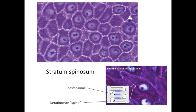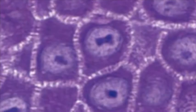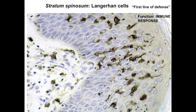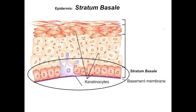The main function of the stratum spinosum is to provide strength and elasticity through all those cell junctions. The cells are named after the apparent spines between them, which are actually anchoring junctions. Besides the keratinocytes, there are also immune cells called Langerhans cells. There are hundreds of these within every square inch of your skin, slowly moving around, sending out their processes, protecting against invaders, and alerting the immune system if anything breaches that epithelial boundary.